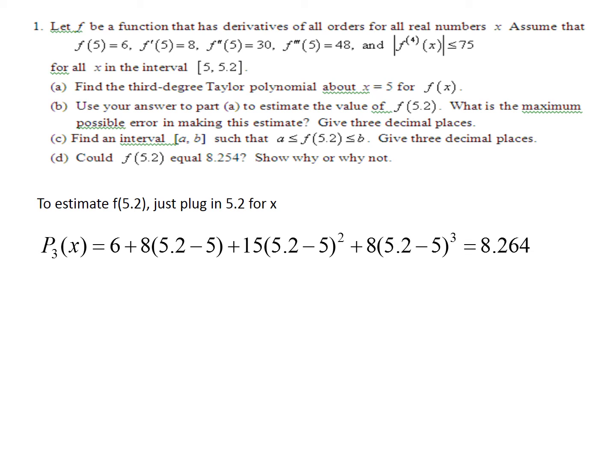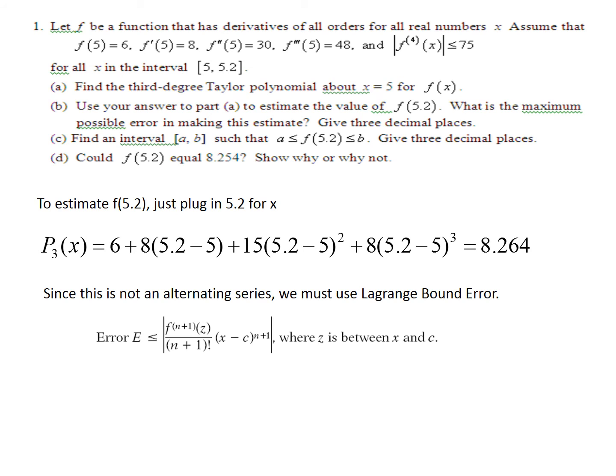Now we want to find the error. So when finding the error, because this is not an alternating series, we have to use Lagrange. So what do we need? Well, x in this case would be 5.2. x is the value that we're estimating, c is the center, and the number of derivatives used was 3, so then n is 3.